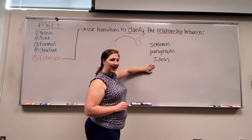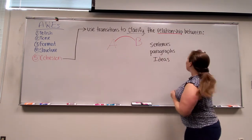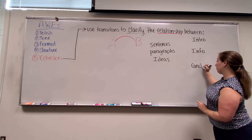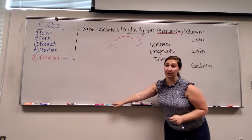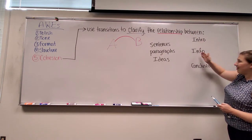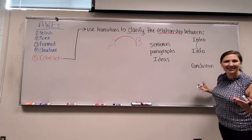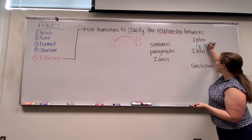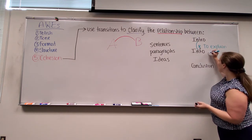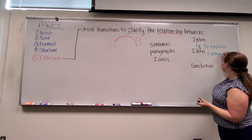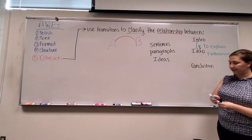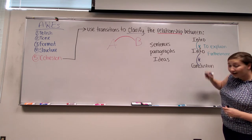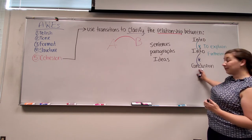When it comes to combining this with the rule of threes, we know that we have our introduction, our information, and our conclusion. When incorporating transitions into your writing, you need to make sure you do so between all of these ideas. Your intro is the beginning, so you let us know by just starting. But when you move into your information, you need a transition — maybe 'to explain' or 'furthermore.' You also need to make sure you transition into your conclusion so your audience knows you are concluding. There is a whole section on that transitions list for concluding transitions.